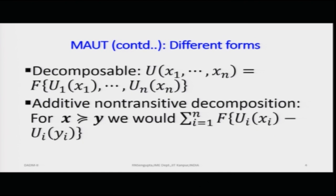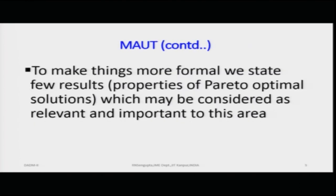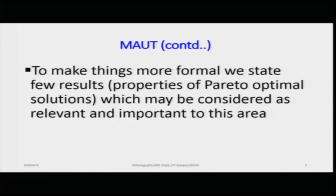To make things more formal, I will state a few results which are the properties of Pareto optimality, and I will give an example stating the solution and how it can be analyzed. We state a few results — properties of Pareto-optimal solutions — which are relevant and important to this area of MAUT or MCDM. MAUT is Multi-Attribute Utility Theory and MCDM is Multi-Criteria Decision Making. There are three properties of Pareto optimality.